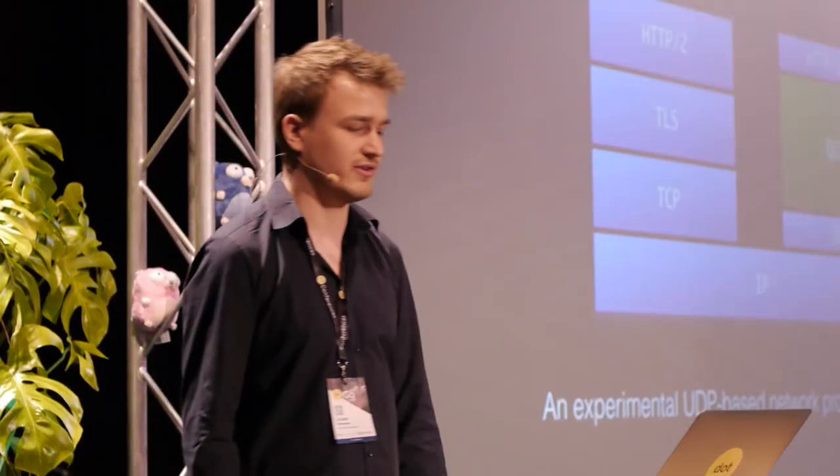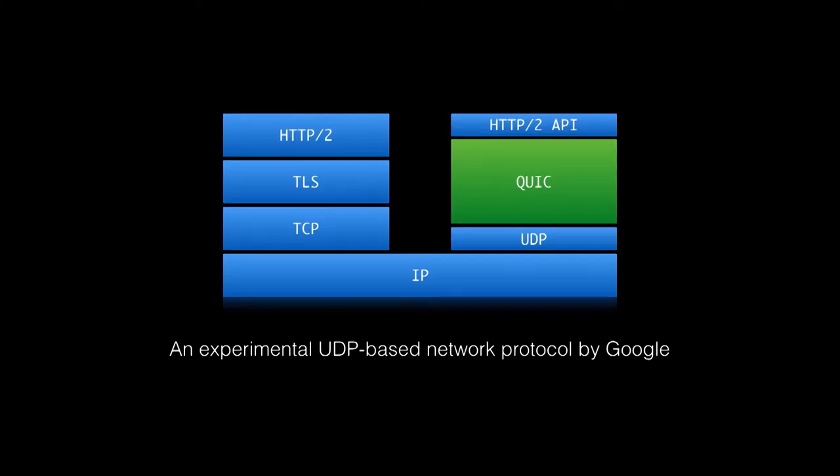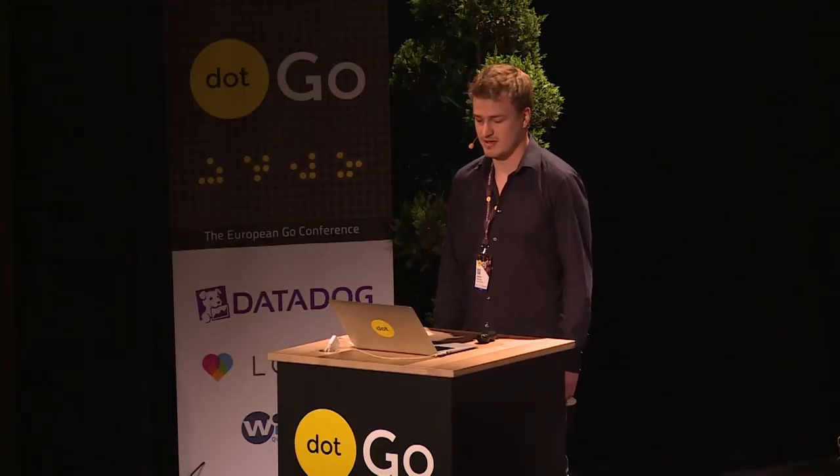QUIC is a new network protocol based on UDP, proposed by Google a couple of years ago. It kind of replaces the traditional stack of having IP, TCP, TLS, and HTTP/2 on top. It runs on top of UDP, and then there's QUIC, with a small HTTP API on top.